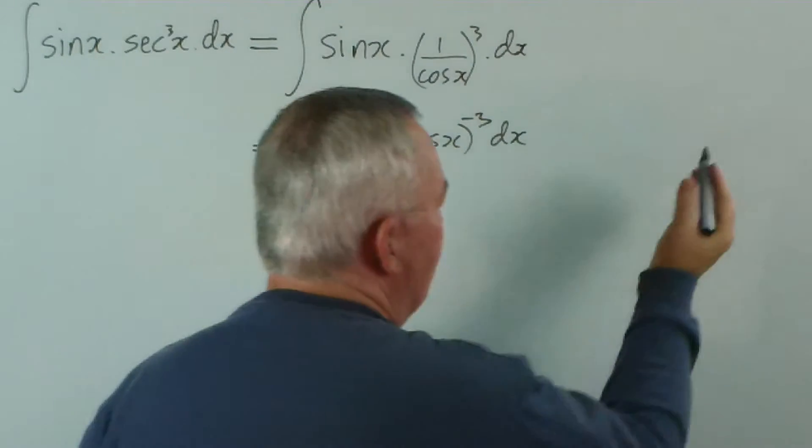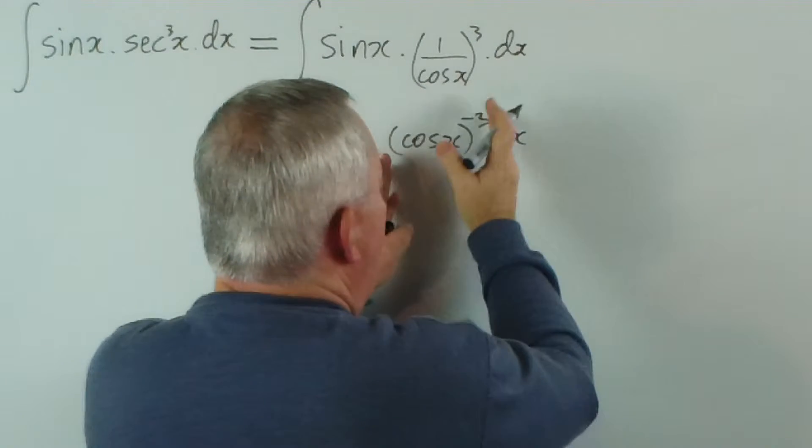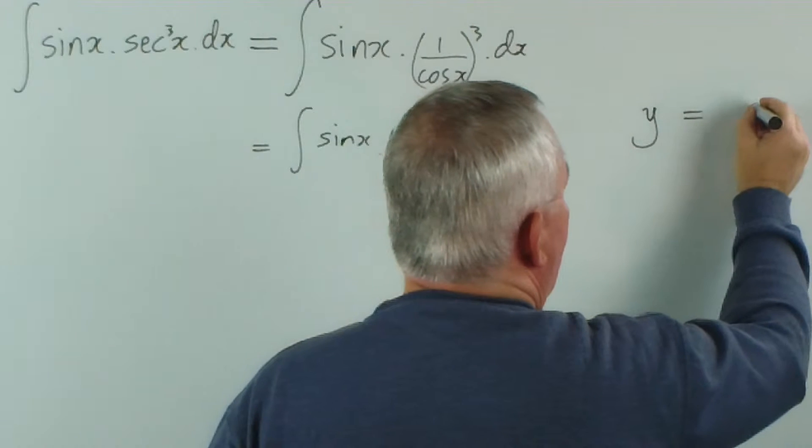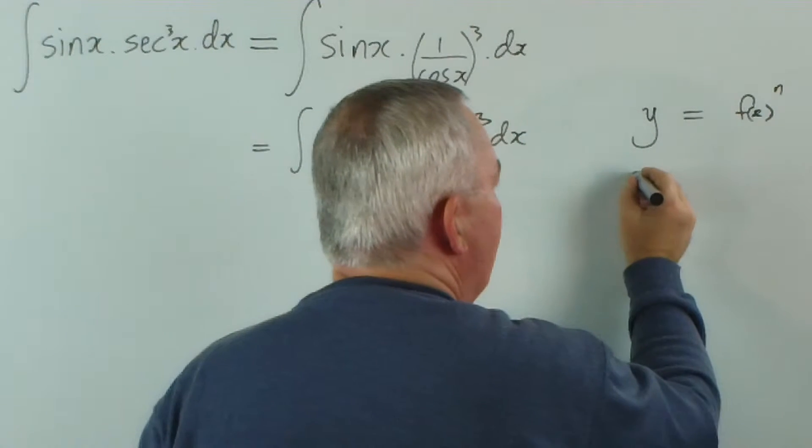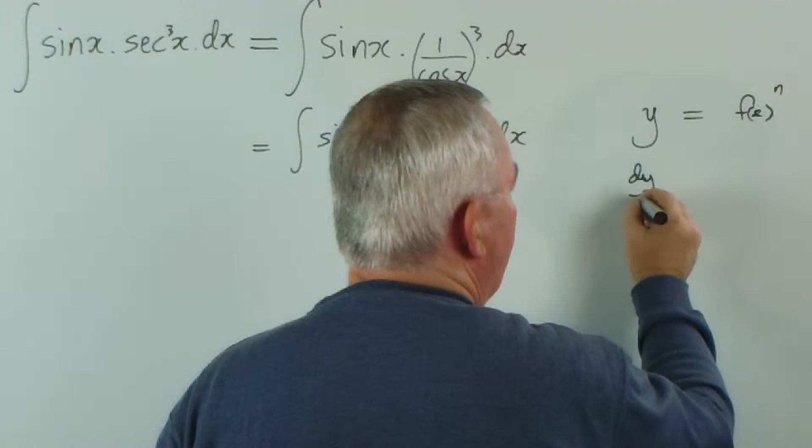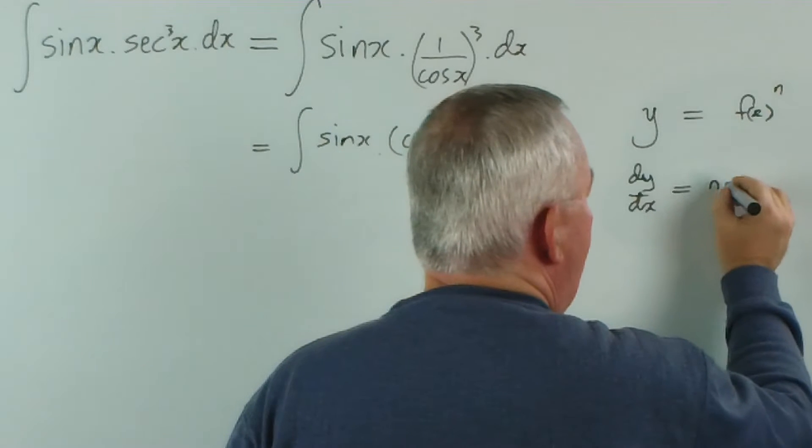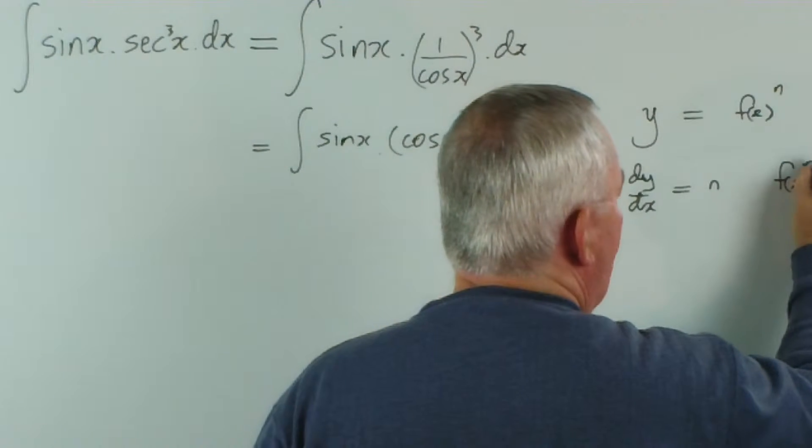What was the first method? The first method was simply to say this: if I'm dealing with powers of a function, that is, if I've got a function of x to some power, and I find the derivative, then I get m multiplied by fx to the power one less.